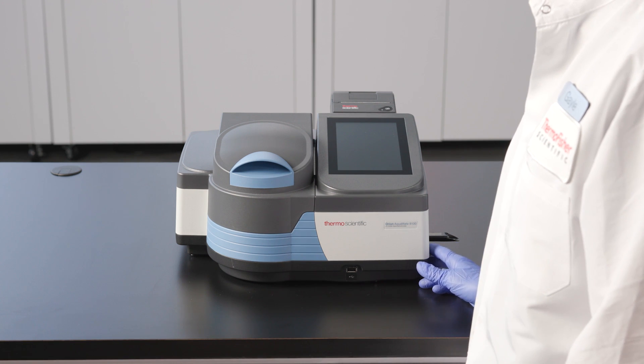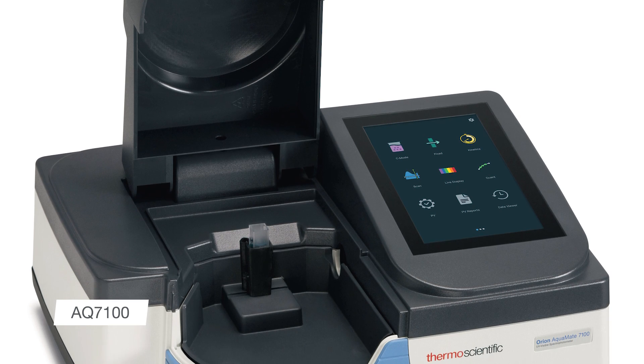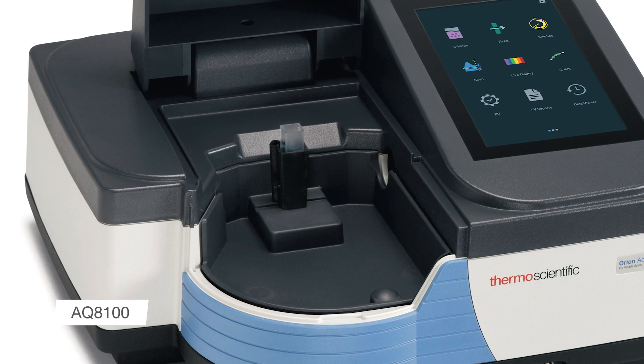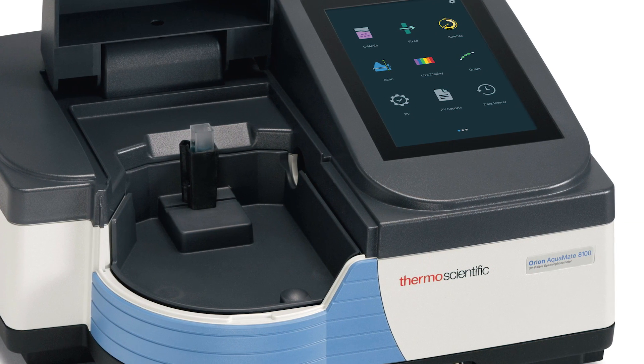There are two Aquamate models available: the AQ7100 visible light spectrophotometer, which has a tungsten halogen lamp, and the AQ8100 UV visible light spectrophotometer that uses a xenon flash lamp.